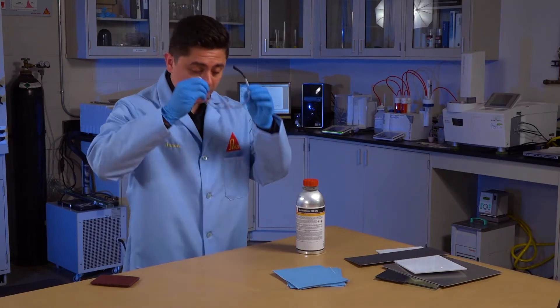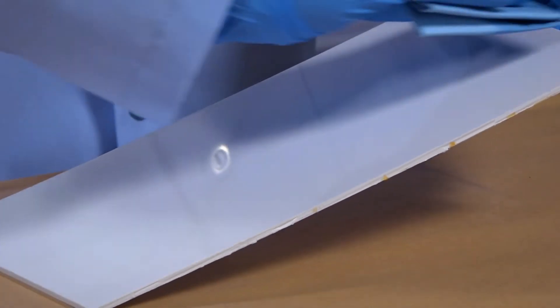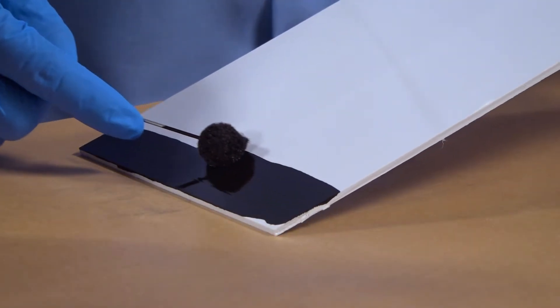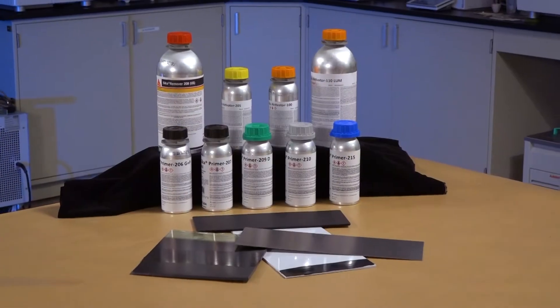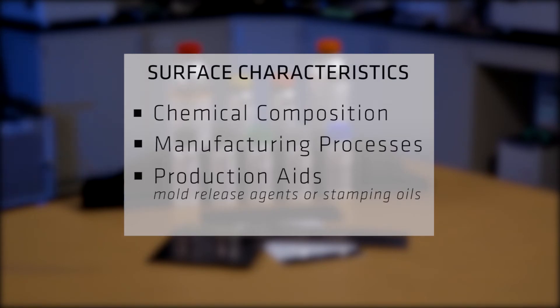The surface characteristics of the substrates strongly affect the buildup of adhesion and the final bond strength. Therefore, it is essential to ensure that surface characteristics of all bonded components are constant and uniform in terms of chemical composition, manufacturing processes, and production aids such as mold release agents or stamping oils.